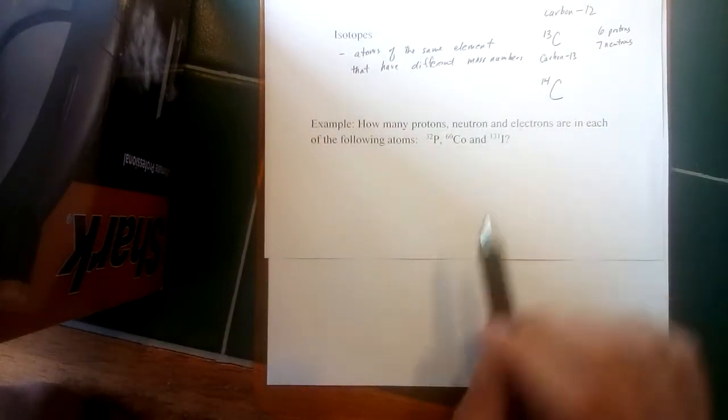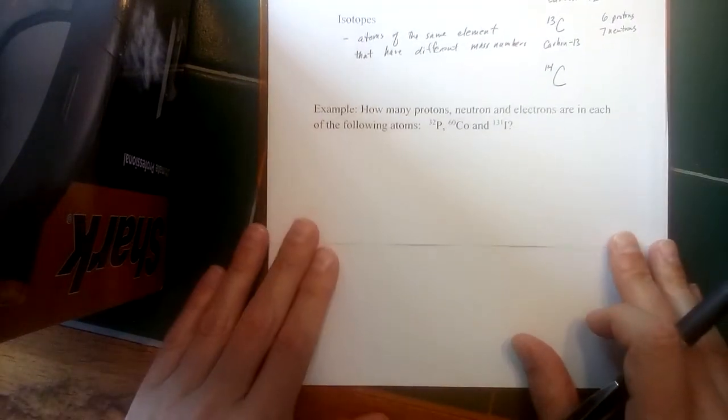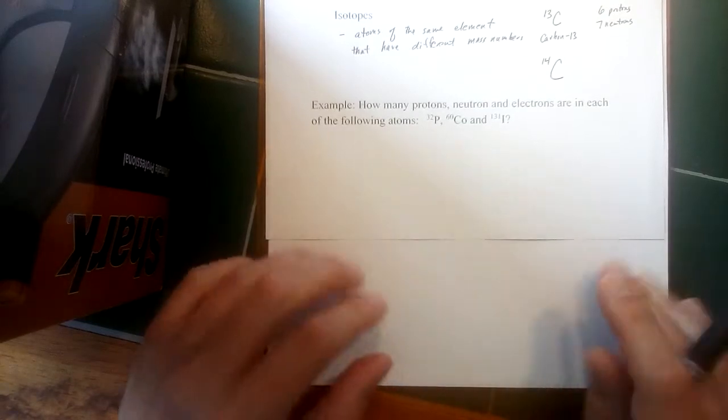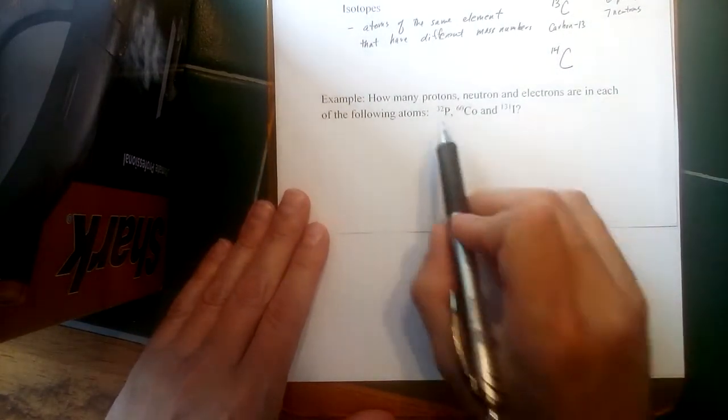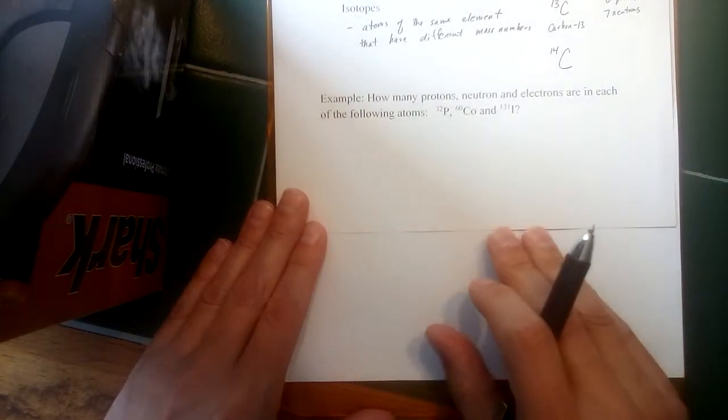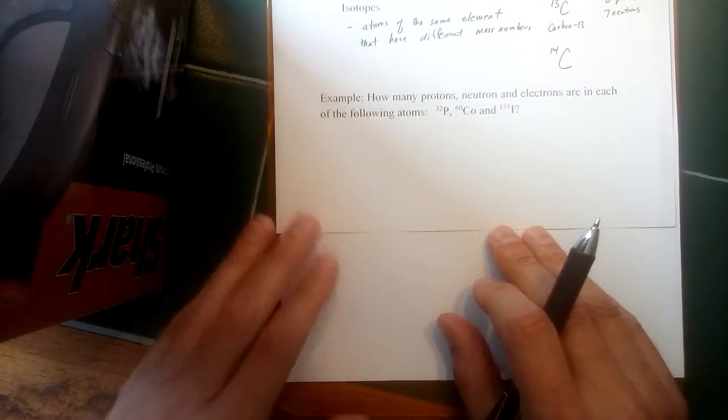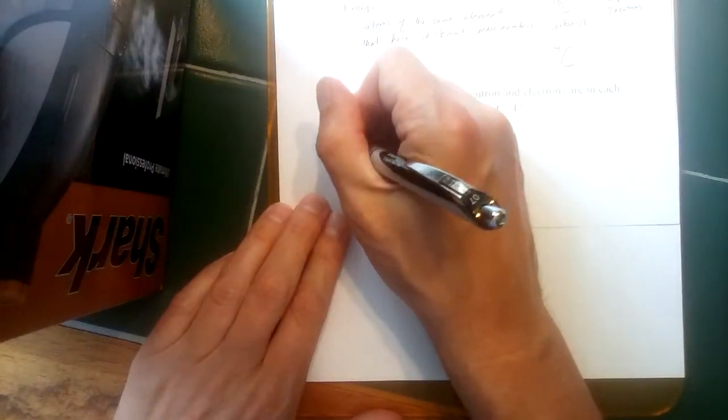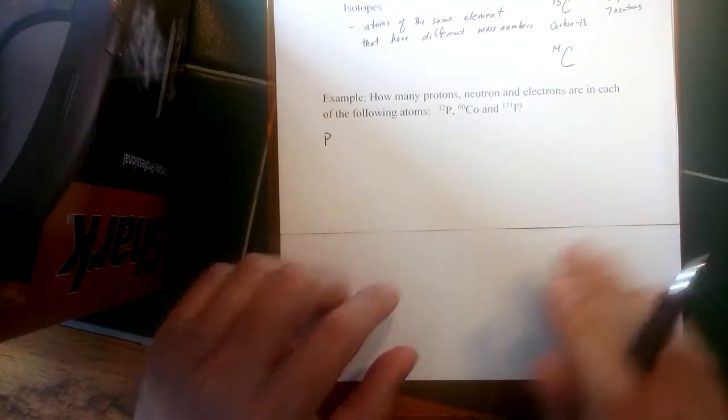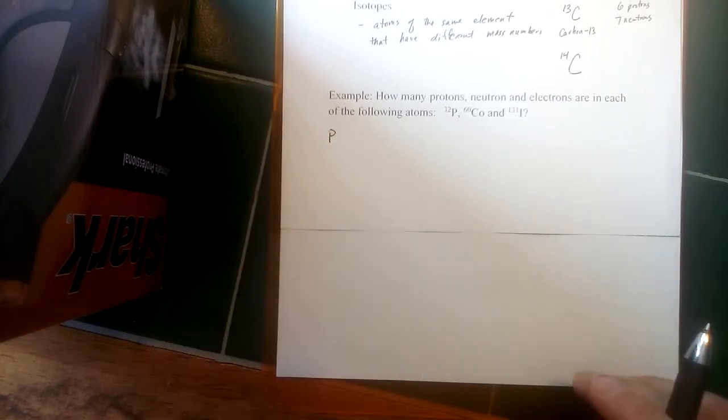We haven't talked about how to figure out how many electrons are present just yet, so we want to know how many protons, neutrons, and electrons are in each of the following atoms. We've got 32 and then the symbol for phosphorus there, so that would be phosphorus with a mass number of 32.